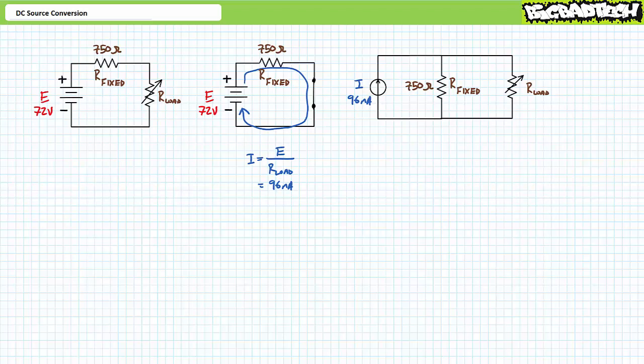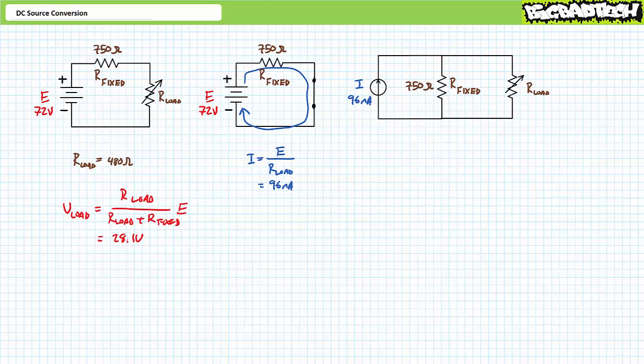If everything said is true, these two different source configurations will induce the same voltage drop across and current through for variable load resistances. Let's say we set the variable load resistor to 480 ohms. Our original configuration is a perfect setup for the DC voltage divider rule — we know the applied voltage and both resistances in a series combination. An application of the DC voltage divider rule demonstrates the voltage across the variable load resistor at 480 ohms is roughly 28.1 volts, and a subsequent application of Ohm's law demonstrates current through it would be 58.5 milliamperes.